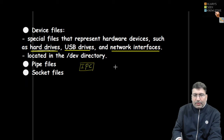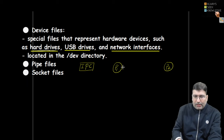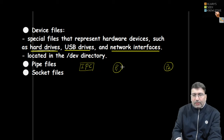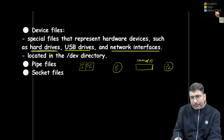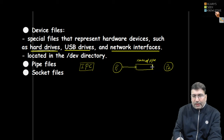Pipe files and socket files are used for inter-process communication, or IPC. When there are multiple processes — say P1 is running and P2 is also running — we need to establish a channel so that information can be transferred from one process to another. One way is using a named pipe. A named pipe works so that from one end one process can write, and from the other end another process can read the data, establishing communication.